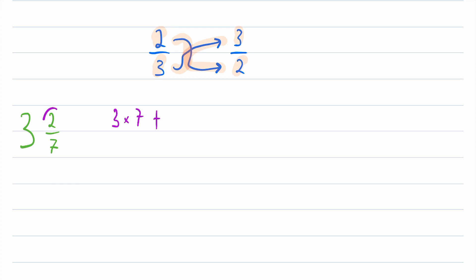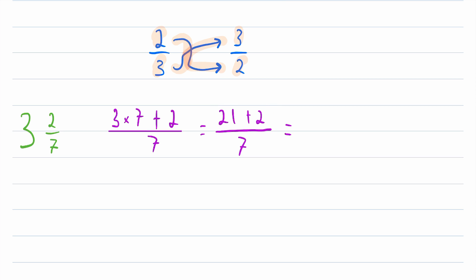Then add the numerator of the fractional part. So that's plus 2, and then it's still all over 7. Remember our order of operations, so we'll multiply 3 by 7 and then add 2. 3 times 7 is 21, plus 2, and this is still over 7.